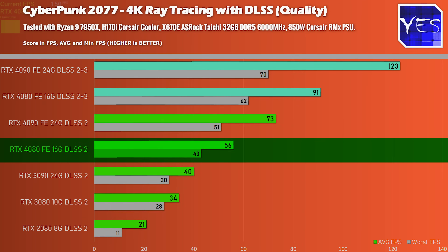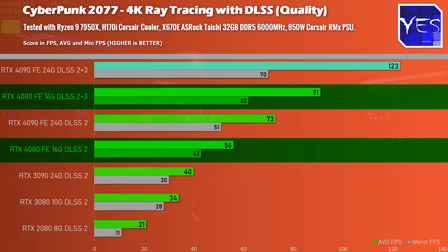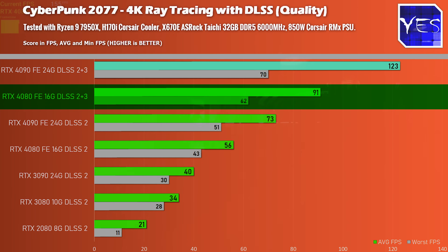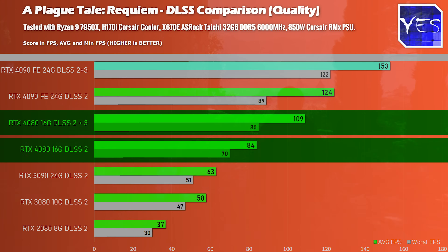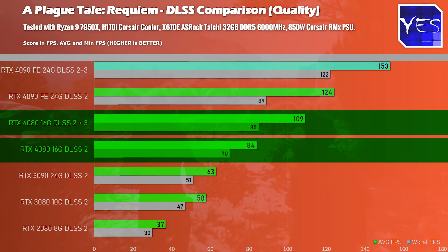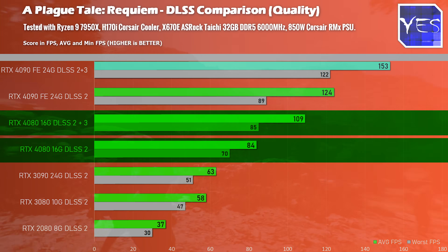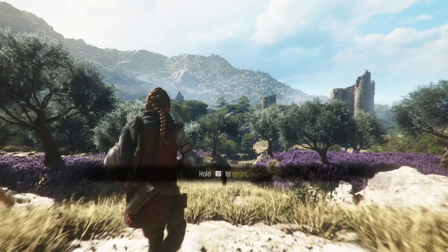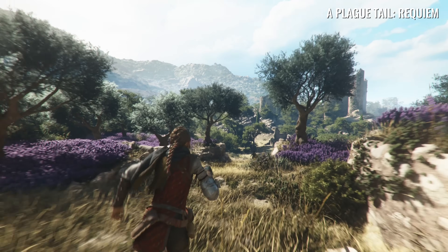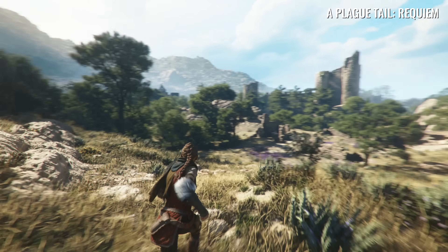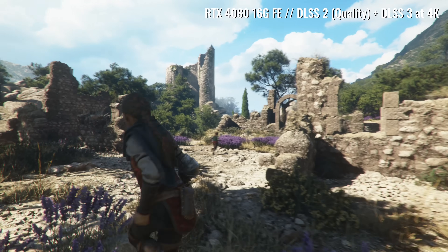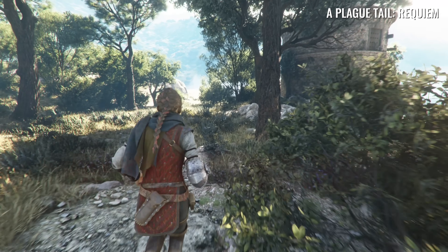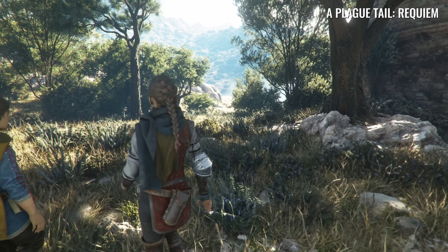For ray tracing, I tested Cyberpunk 2077 and A Plague Tale Requiem. With DLSS 2 Quality mode enabled, you can get a smooth experience with the RTX 4080 in Cyberpunk. DLSS 3 was also tested in both titles — it does a decent job as long as you're not moving around too fast, as rapid mouse movement can introduce some artifacting. In Plague Tale Requiem running downhill, DLSS 3 delivered smooth extra fps without looking bad at all.